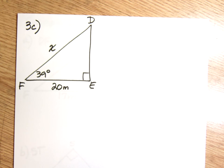Next problem. We have triangle DEF and we were asked to find side DF. And we were given an angle and it is 39 degrees.